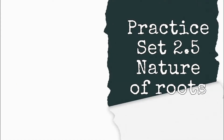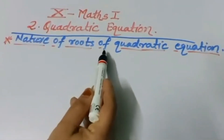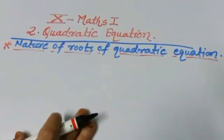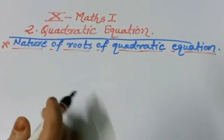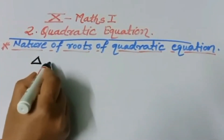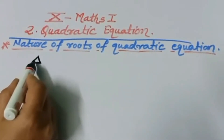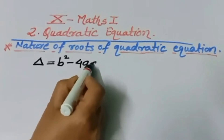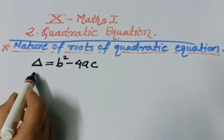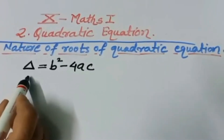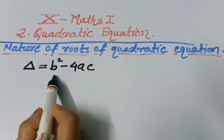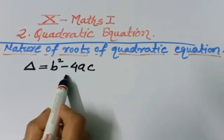Assalamualaikum everyone. Today in this 6th part of quadratic equations, we will study how to determine the nature of the roots of a quadratic equation. To find the roots of any quadratic equation, we first have to find the value of the discriminant. The discriminant is expressed using the Greek symbol delta. Delta is equal to B² minus 4AC, and from this value we can determine the nature of the roots.